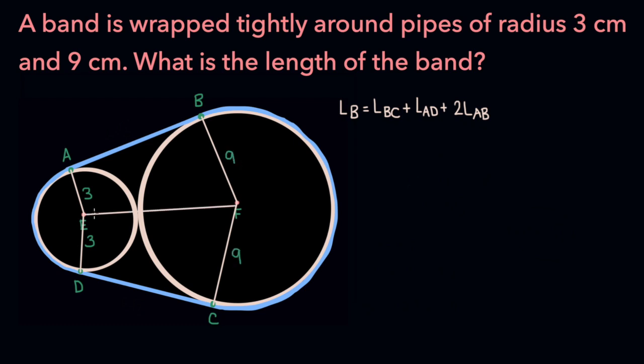The length of this line segment is just the radius of the smaller pipe plus the radius of the larger pipe, so 3 plus 9, which is 12. And here's the key to this problem.